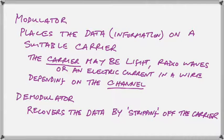Now we look at the modulator and demodulator aspect. The modulator places the information we're trying to transfer, which is data, onto a suitable carrier. The carrier could be light or radio waves or an electric current in a wire, depending on the nature of the channel.